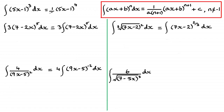In other examples I might write the whole thing over 20 — that's up to you. So the answer is one-twentieth times (5x minus 1) to the power 4, plus c. That's that one done.